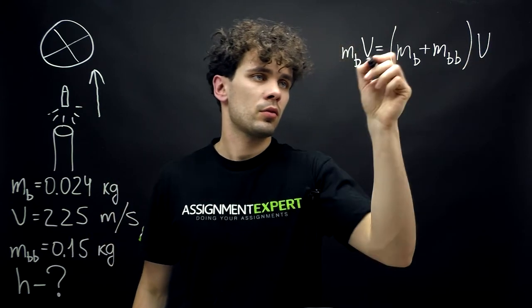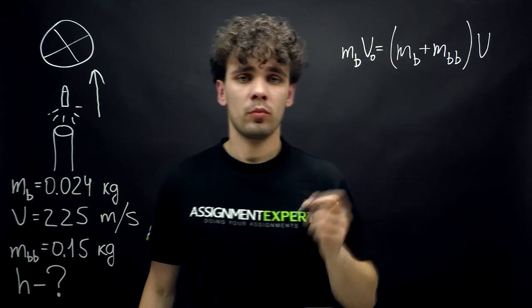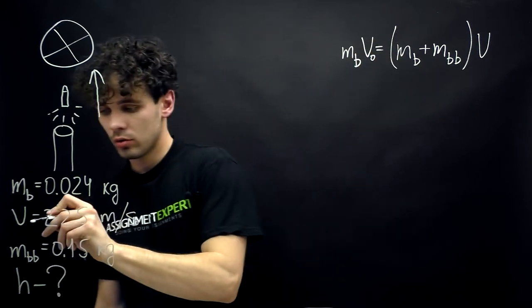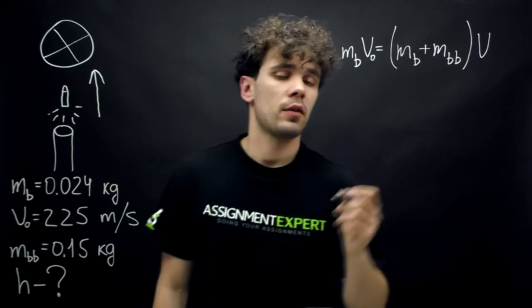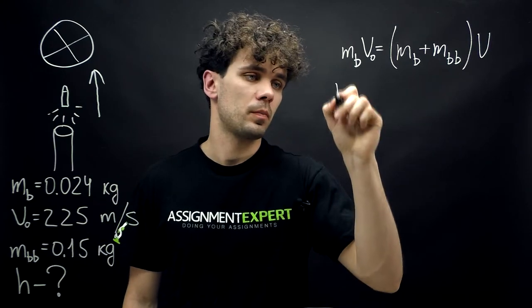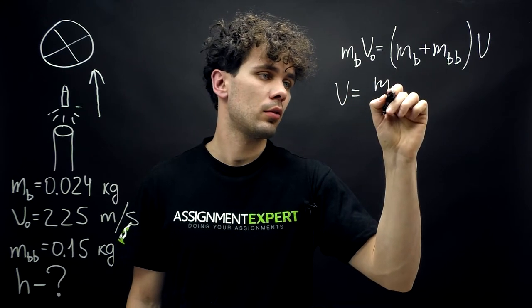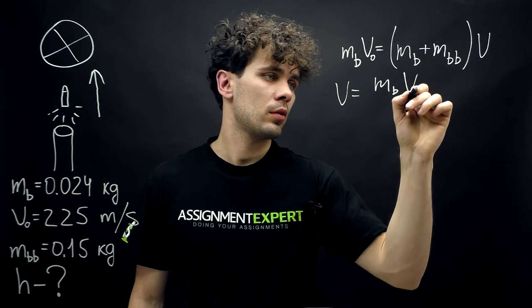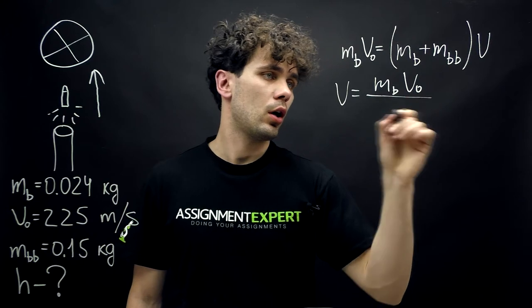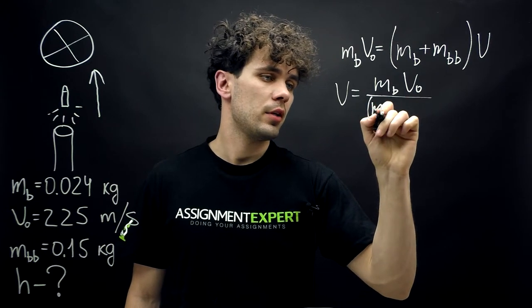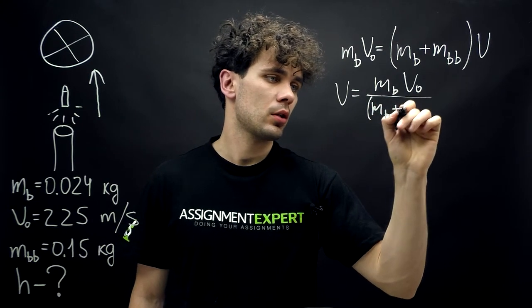Now, let's make this V0 because it was the initial speed. And from here we can derive the final speed of the system. It is equal to M_b times V0 over M_b plus M_bb.